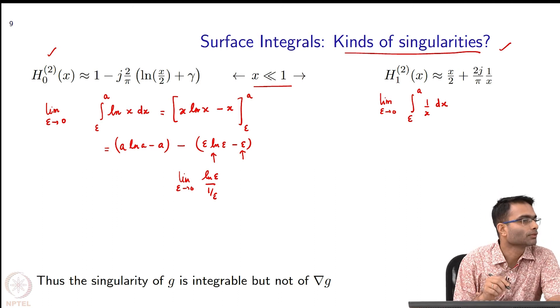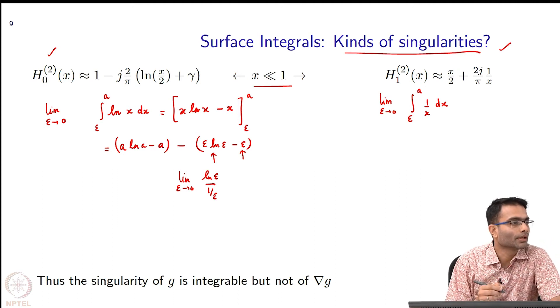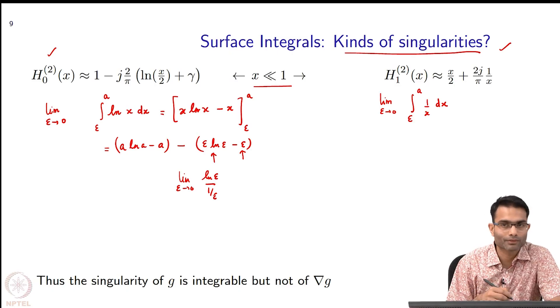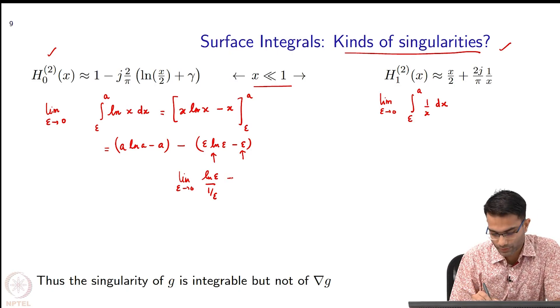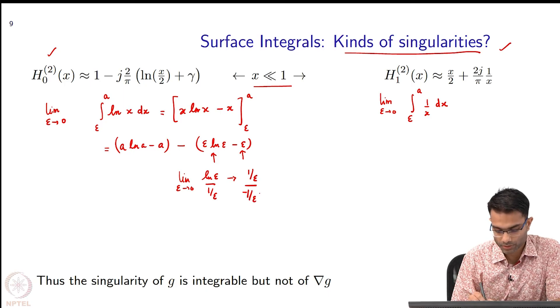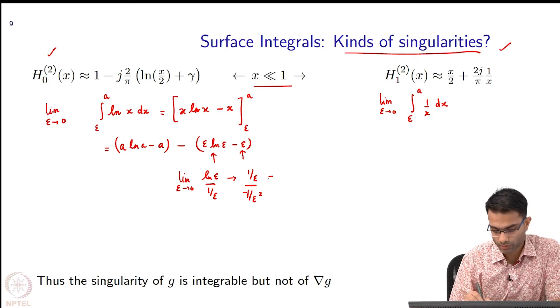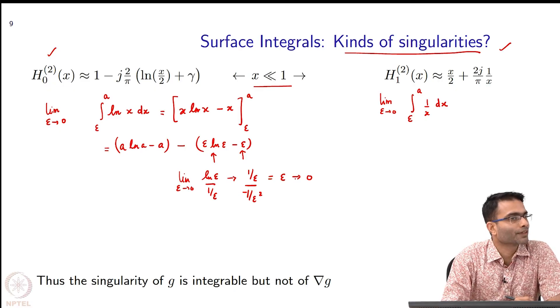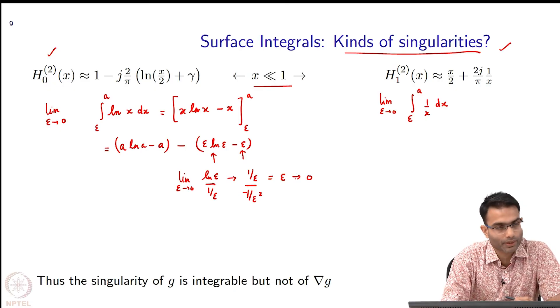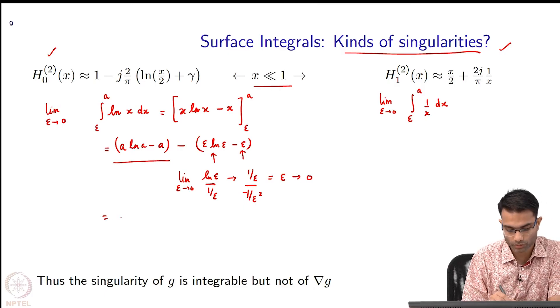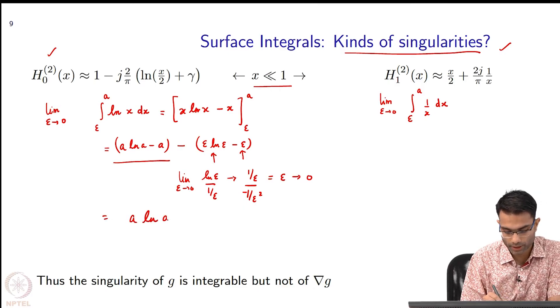I will do limit epsilon tending to 0. I can write it as log of epsilon by 1 by epsilon. Now, it is in what form? Infinity by infinity form. I can do it in either way. This will become 1 by epsilon divided by minus 1 by epsilon squared, is equal to epsilon tends to 0. I integrated a function which had a singularity and what did I get? I got only this guy. This singularity is equal to 0. A log A minus A.